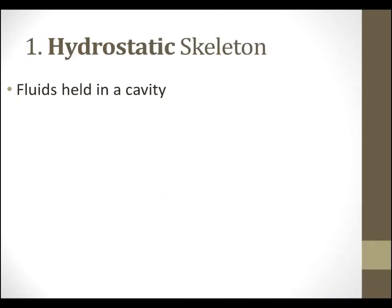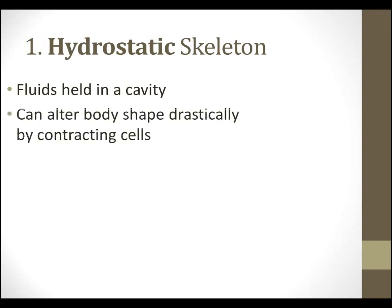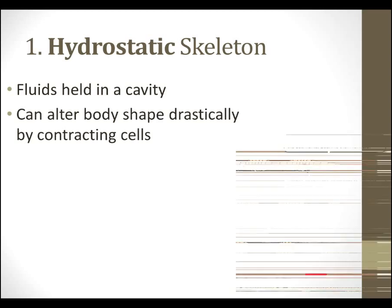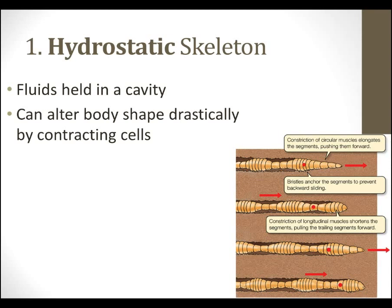So, hydrostatic skeleton. More or less, you have fluids held inside a cavity. As the name implies, this has to do with water. This allows organisms to alter their body shape drastically by contracting different cells. An earthworm is a great example of this. They don't have a skeleton per se, but they do have a hydrostatic skeleton. There are no bones, but there is still movement.